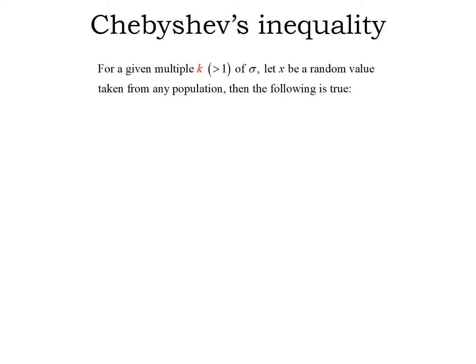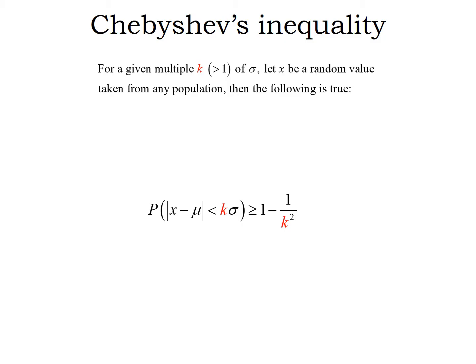So for a given random value and a multiple of sigma, the following statement is true. Here's your probability statement — a lot of symbols, but we're going to walk through those. Starting left to right: capital P with parentheses always represents the probability that whatever is written inside the parentheses happens. Inside the parentheses, we're looking at the probability that the distance between a value and the mean — X minus mu — could be positive or negative depending on if X is above or below the average mu. When you take the absolute value, we're left with just the distance between X and mu.